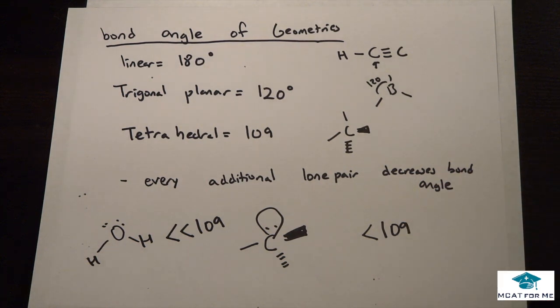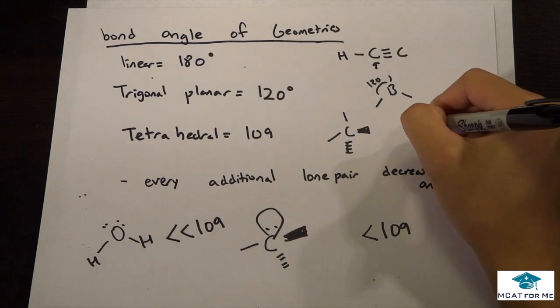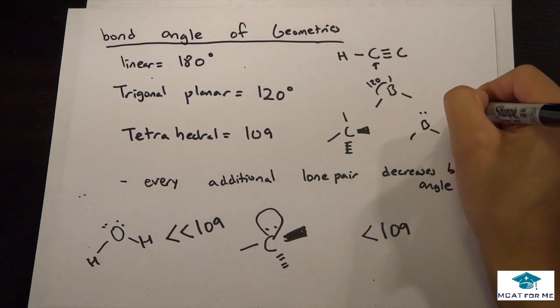But they are still lower. That's all I meant by that. The same goes with trigonal planar. If, for example, we were to have something like that, it would be less than 120.